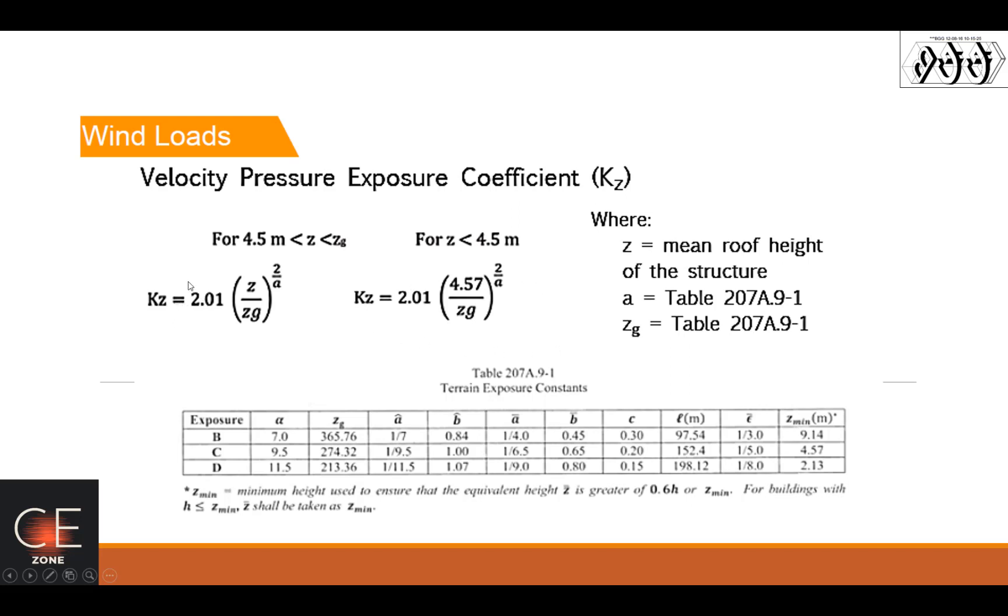And then KZ for a height greater than 4.5 but less than the gradient height, you have 2.01 times Z over ZG raised to 2 divided by alpha. So you base this one on table 207A.9.1. Assuming for exposure B, you have a gradient height of 365.76 and then alpha 7.0.